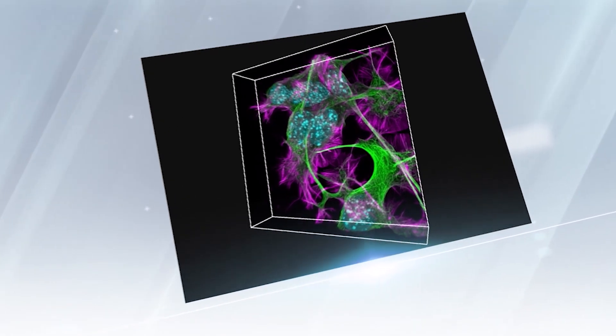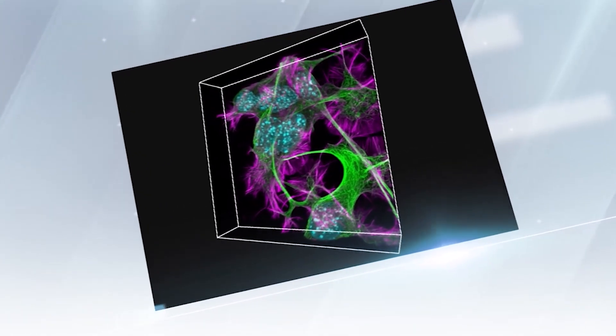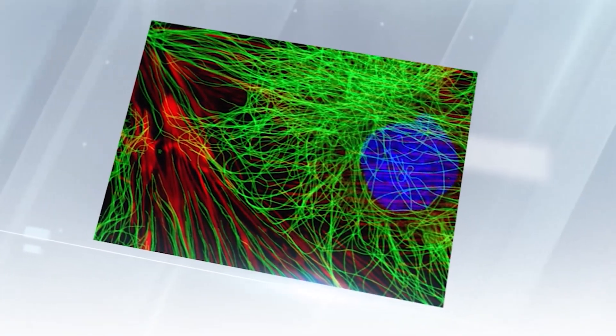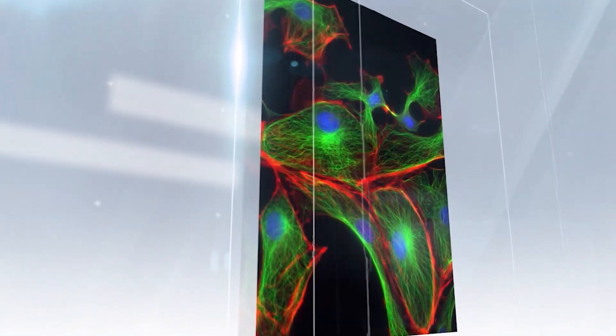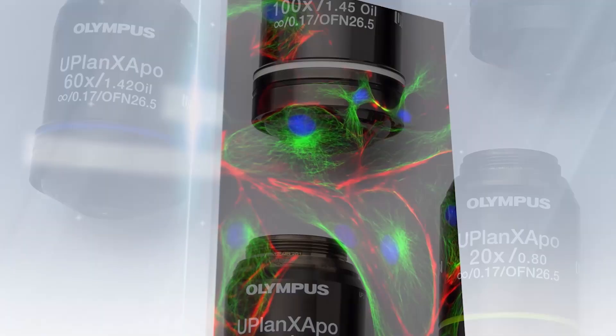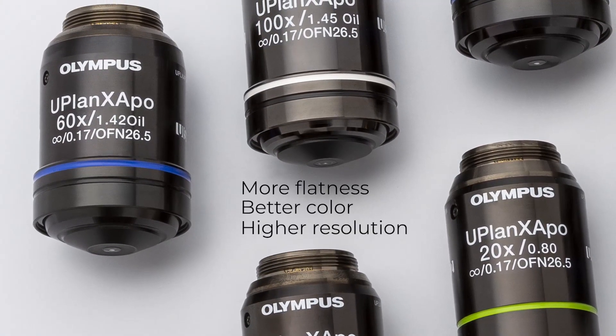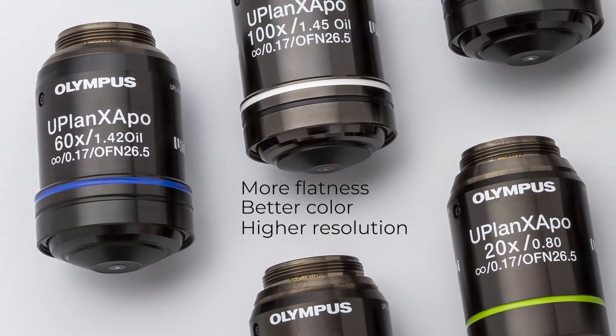Our X-Line objectives enable you to maximize your microscope's optical performance by minimizing aberration, so you can see a true representation of your sample without compromise. You can achieve more flatness, better color, and higher resolution simply by upgrading this single optical component.